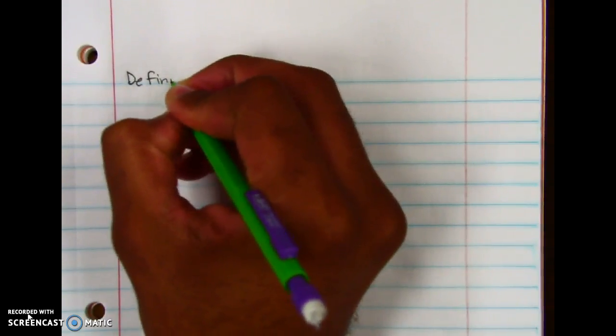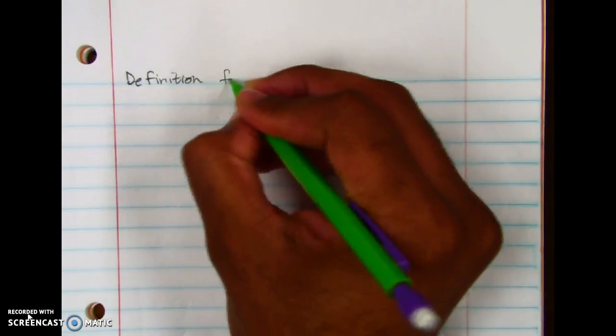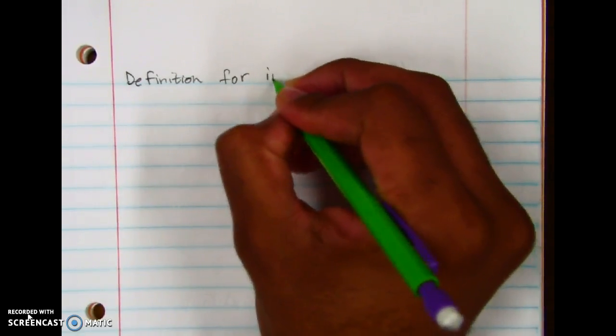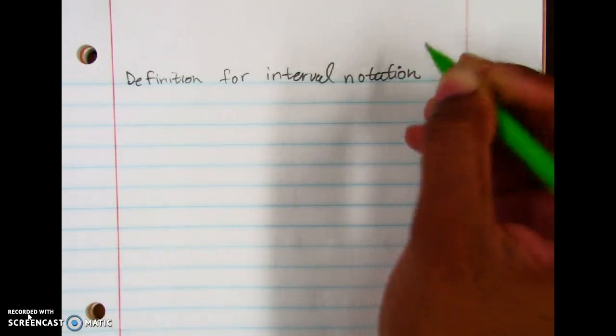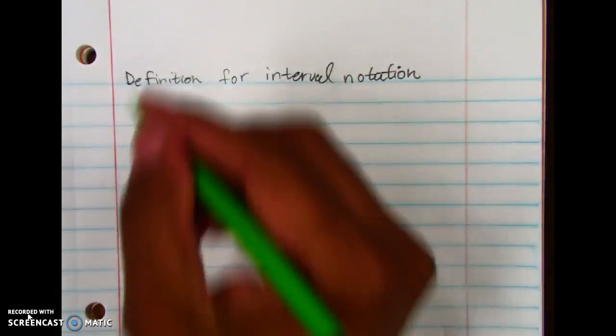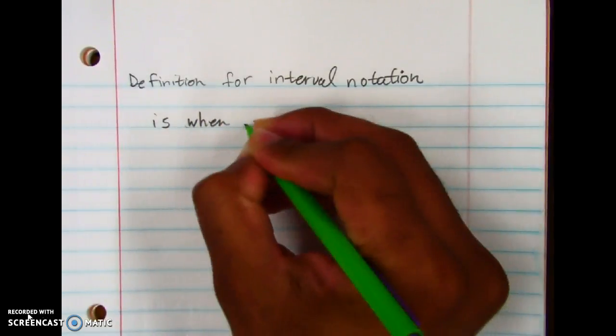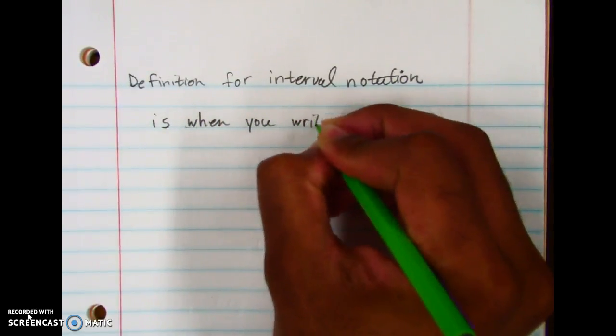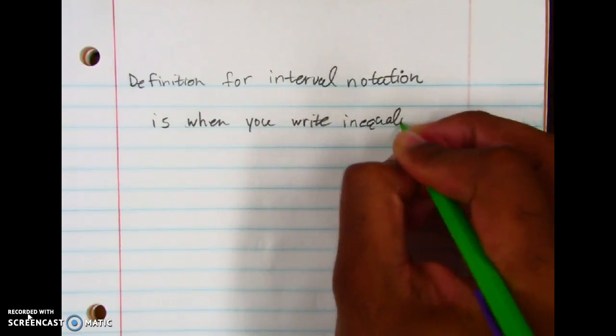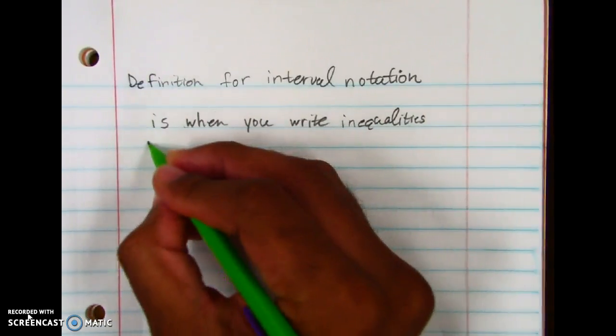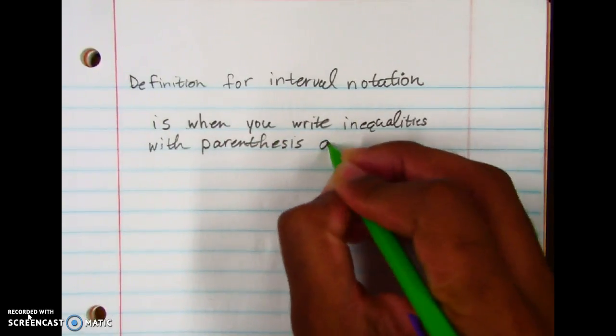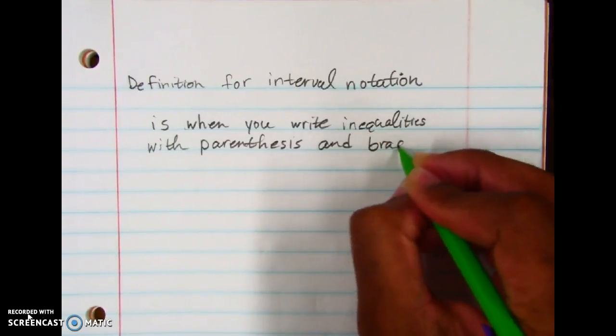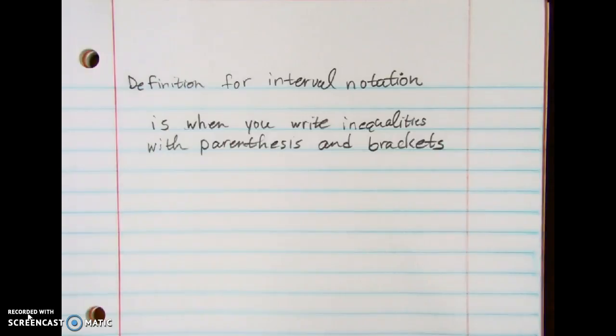And this is my definition, not from a book but actually my definition. So we just say interval notation is when you write inequalities with parentheses and brackets. So when you write inequalities with parentheses and brackets, that's interval notation, and then you got it easy.